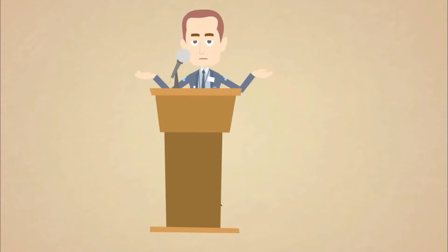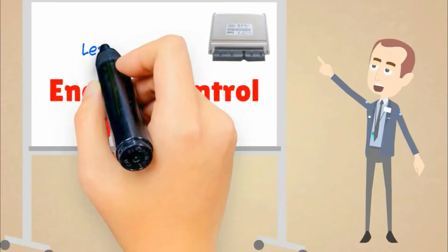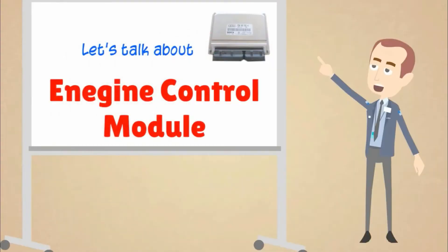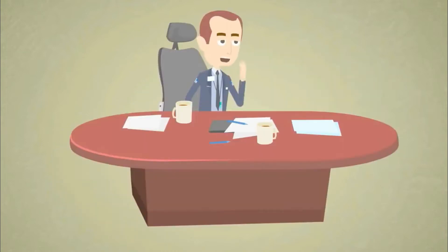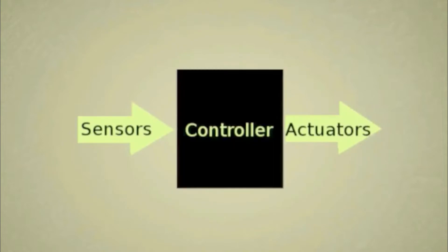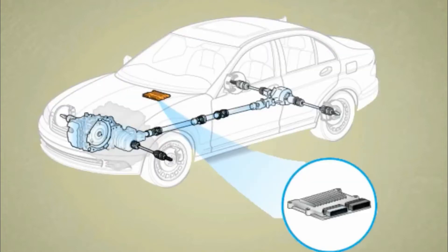Hello viewers, let's talk about engine control module and its requirement in vehicles. Basically, engine control module is known as power train control module or engine control unit. The main function of this controller is to get information from sensors and run certain actuators. The vehicle computer uses these inputs to adjust its settings so the vehicle can run in accordance with your driving habit.